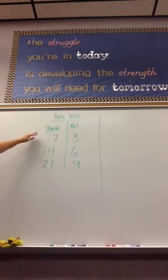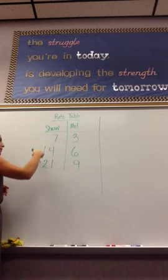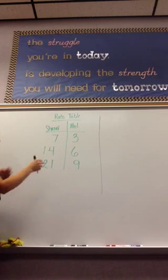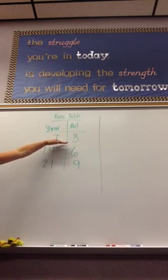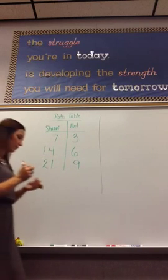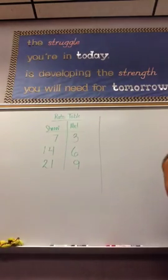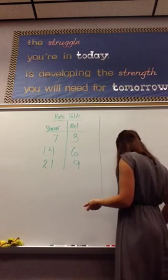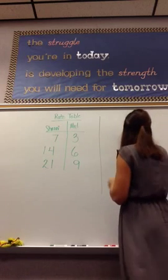So, this ratio table has equivalent fractions. All of these fractions are equal to each other. They can all be reduced to seven to three, but give us different lengths for their ribbon. Now, on this half, we are going to use the same information to create a tape diagram.